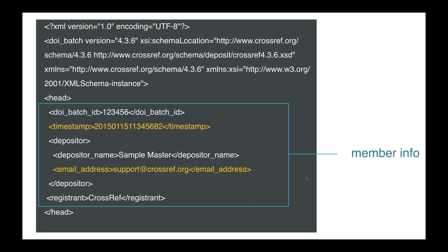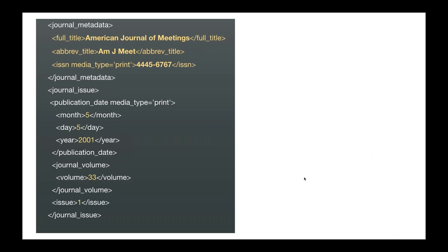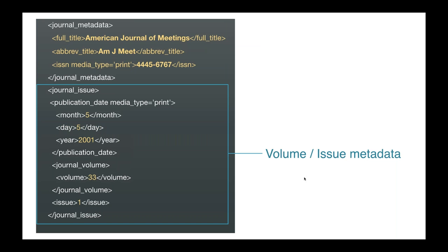Here's an example. Every XML file that you send to us has some member-specific information in the head section. Note the email address — it's used to send out logs when your file has been processed. We also include metadata in the file. Here's a basic journal article deposit as an example. It contains journal metadata such as title and ISSN, and issue and volume information like volume, issue, and dates. You can also assign an identifier to a journal as a whole or a specific journal issue if you'd like.